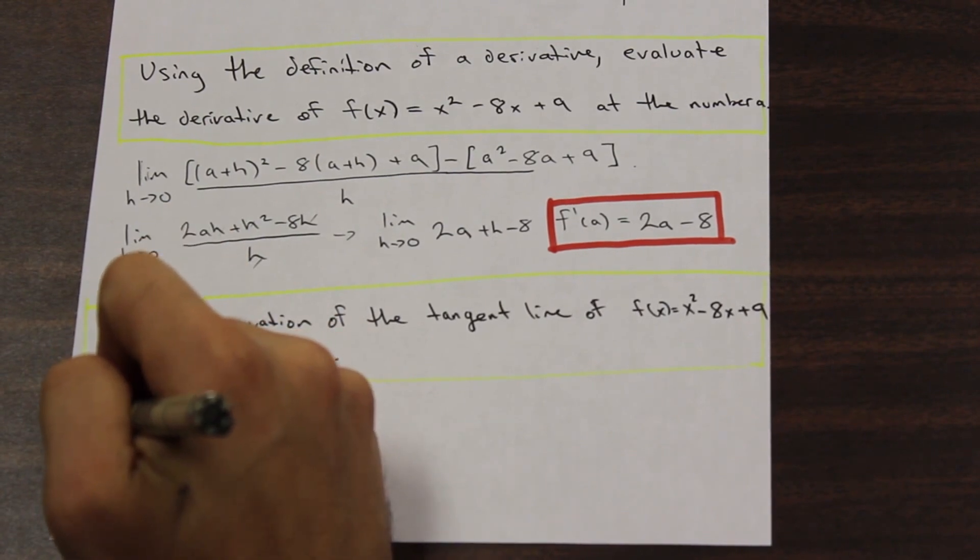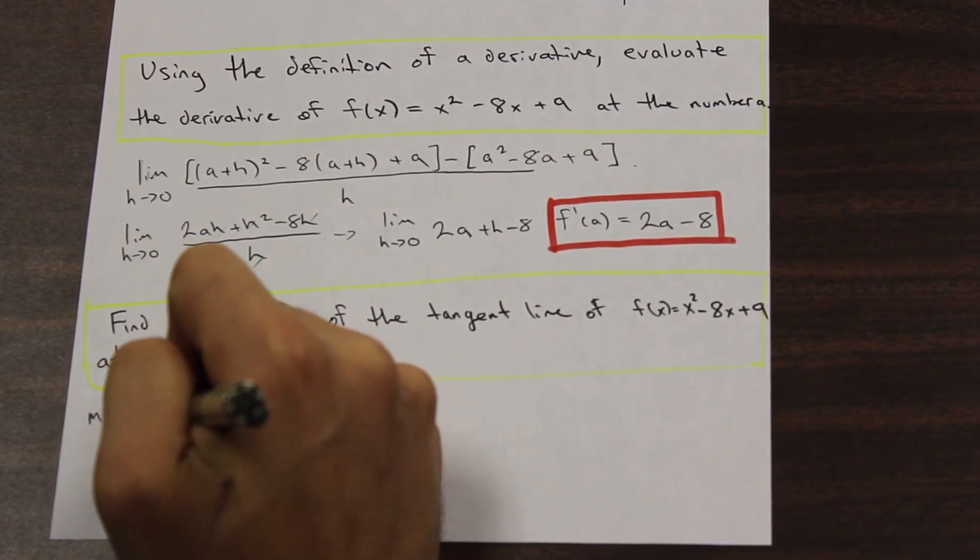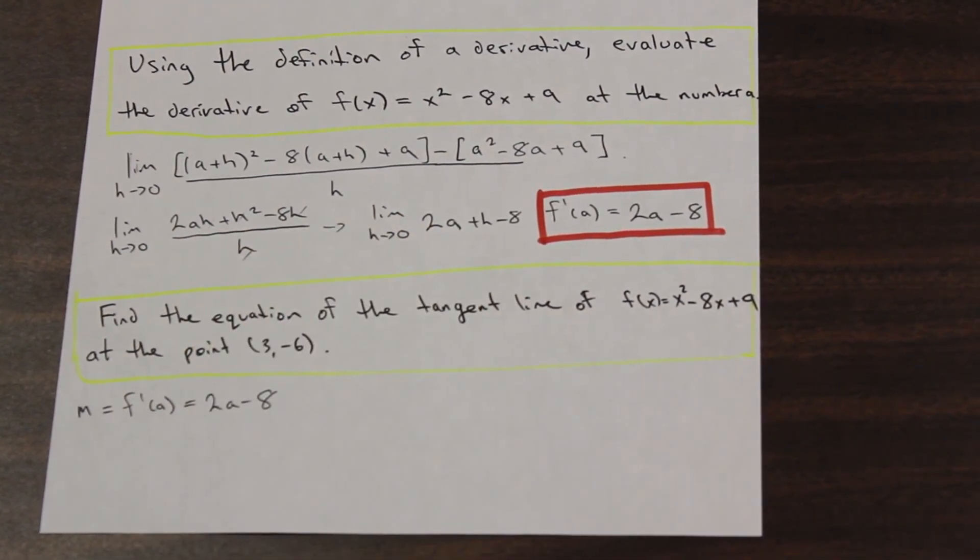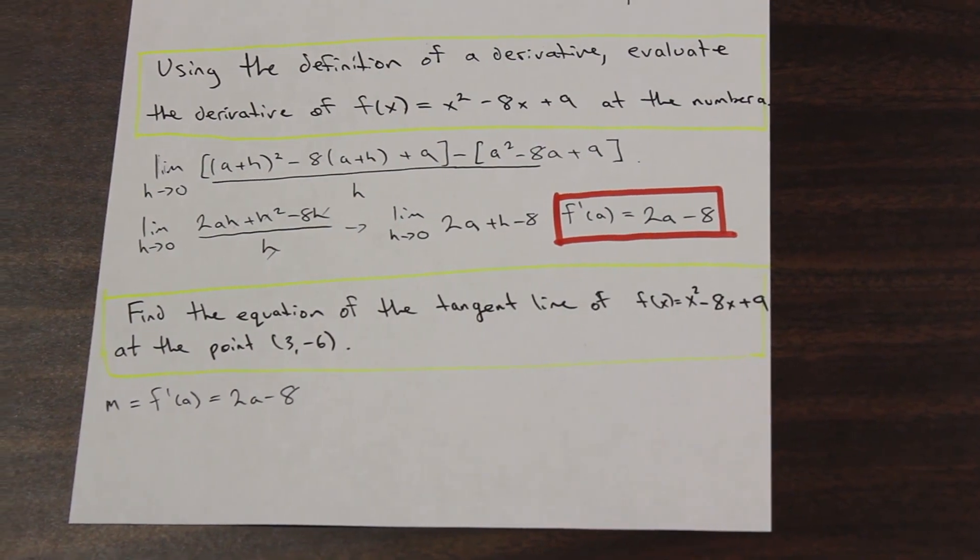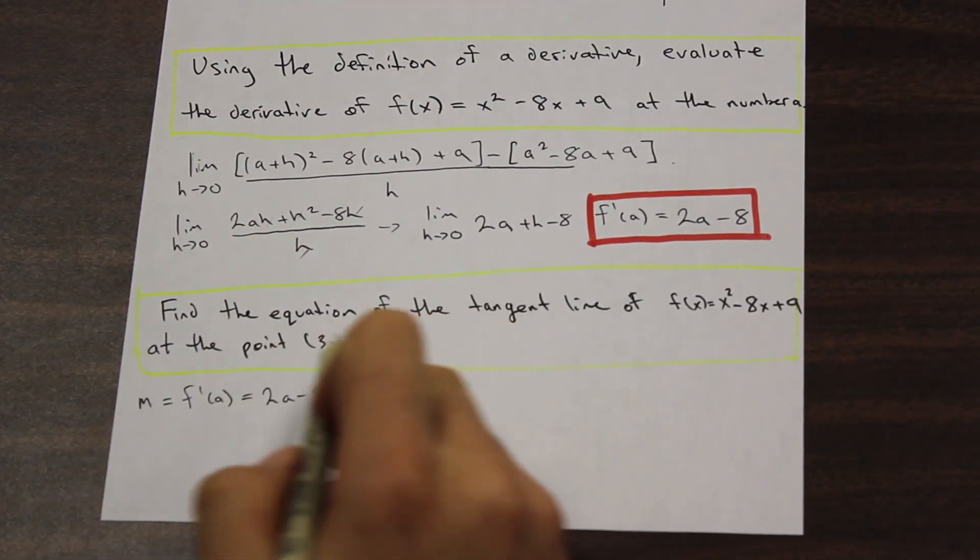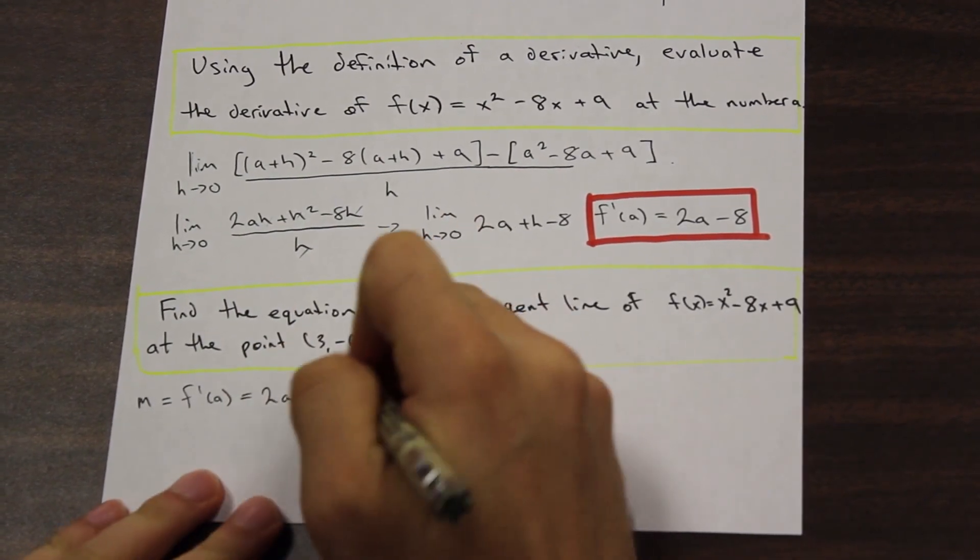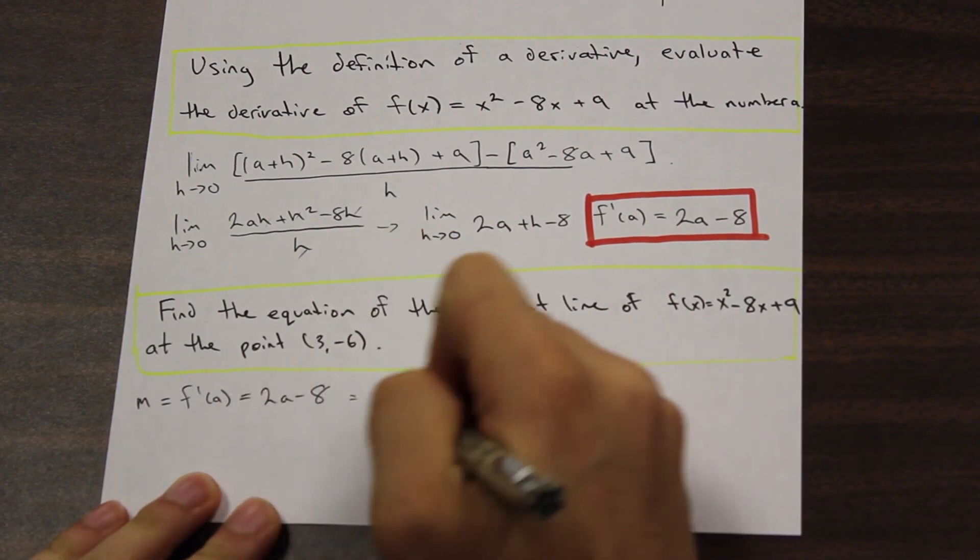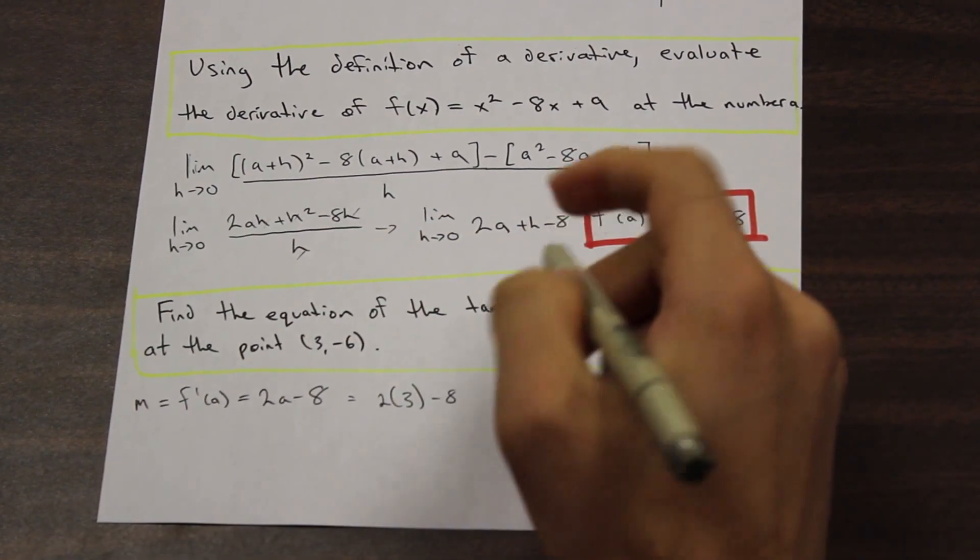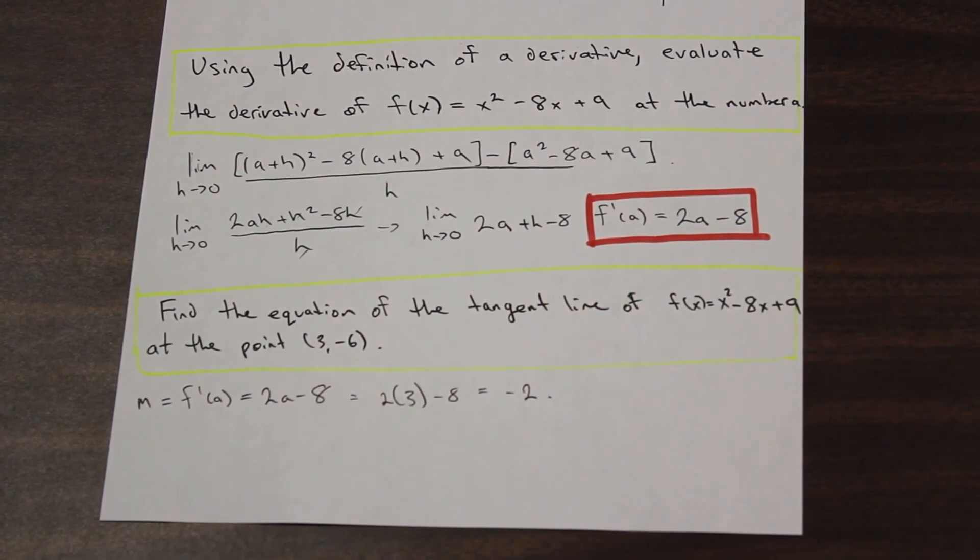We have that the slope is equal to f'(a), which is equal to 2a - 8. Very good. Now in this case, our a value here is our x value. Our a is our x value. So we're going to go ahead and plug in 3 into our slope here. And that is going to give us the value of negative 2. So our slope is negative 2.